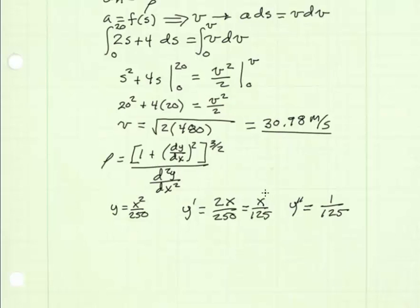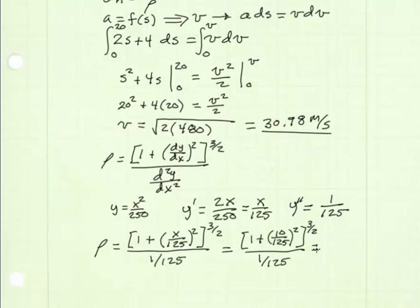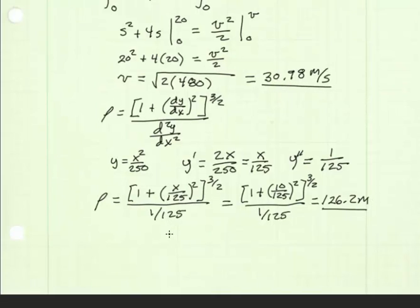Plugging these back into our radius of curvature equation — the first derivative and second derivative going in — we get the radius of curvature equal to 1 plus x over 125 squared, to the 3 halves, divided by 125. We want the radius of curvature at x equals 10 meters, where our position s is 20. Putting in 10 for x gives us a radius of curvature equal to 126.2 meters. With velocity and radius of curvature known, our normal acceleration equals 30.98 squared divided by 126.2, giving 7.605 meters per second squared.